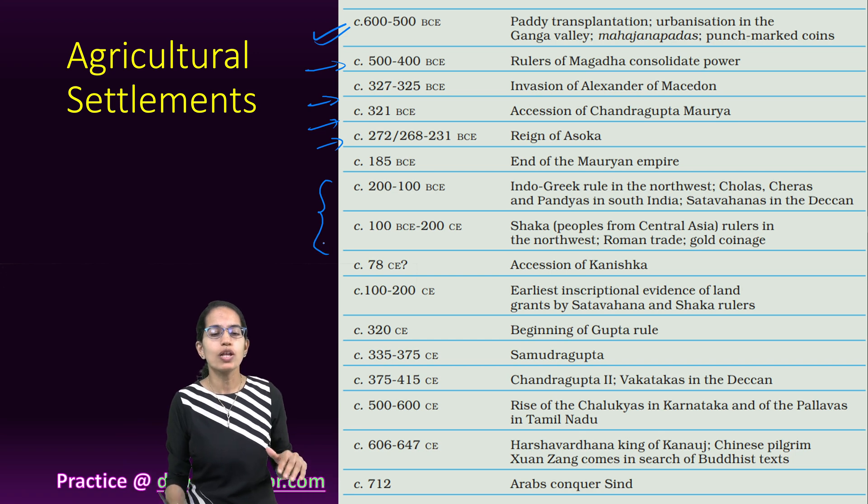Another interesting story concerns the Sudarshan Lake, which had a rock inscription. This lake from Gujarat was built by the Shaka ruler Rudradaman. During his time, a huge gush of water caused the lake's embankments to break. Rudradaman did not impose any taxes and rebuilt the complete structure with his own money. The lake was later repaired again as mentioned under the Gupta dynasty.